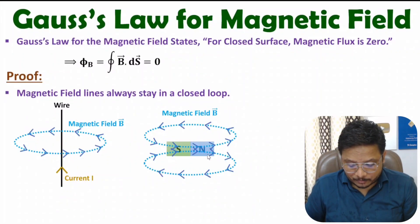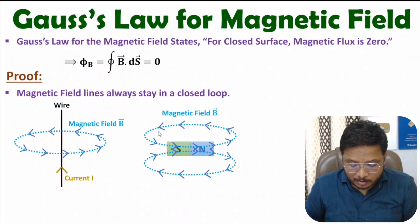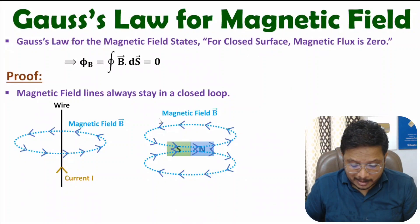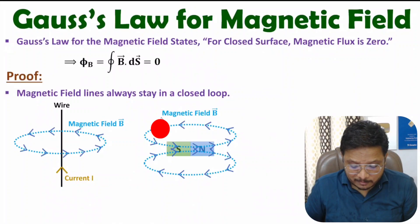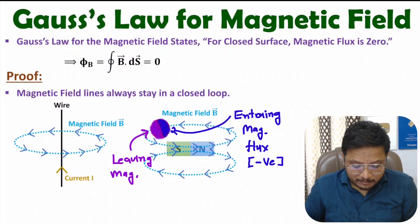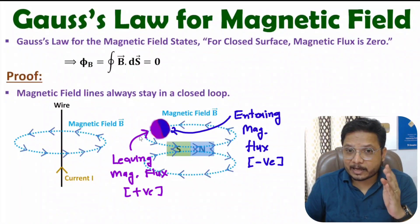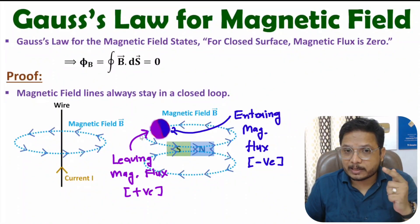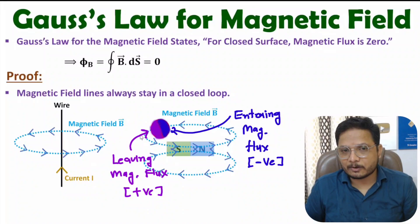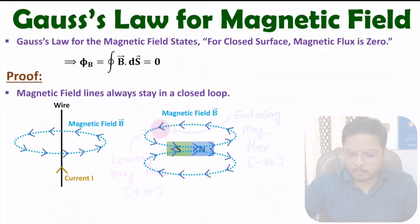Now, because magnetic field lines stay in a closed loop, if you place any enclosed surface over here, what will happen is: with the given enclosed surface, there will be entering flux on one side and leaving flux on the other side. One should know that entering flux is negative and leaving flux is positive, so in total the flux is zero.